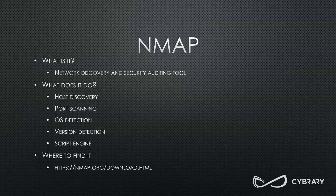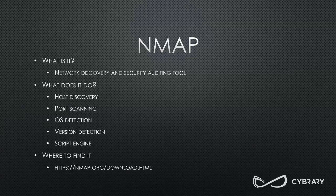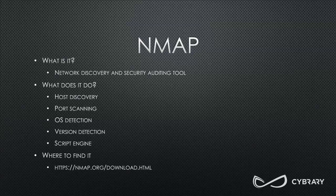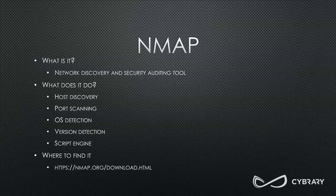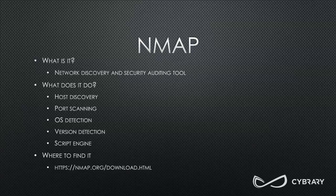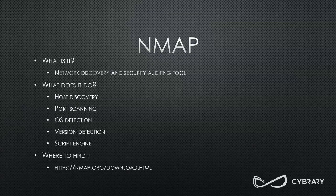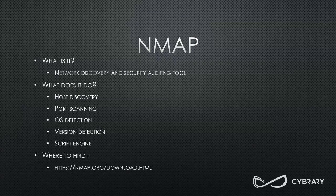Finally, we have Nmap. Nmap is one of the most basic tools you'll hear about in network security and cybersecurity. It is a network discovery and security auditing tool found on every single Linux distribution. It's used for host discovery, port scanning, OS detection, version detection, and has an awesome script engine. Nmap will go out, identify everything alive on your network, scan all the ports of each machine, and tell you what services are running and their versions — which is very useful for detecting outdated software.